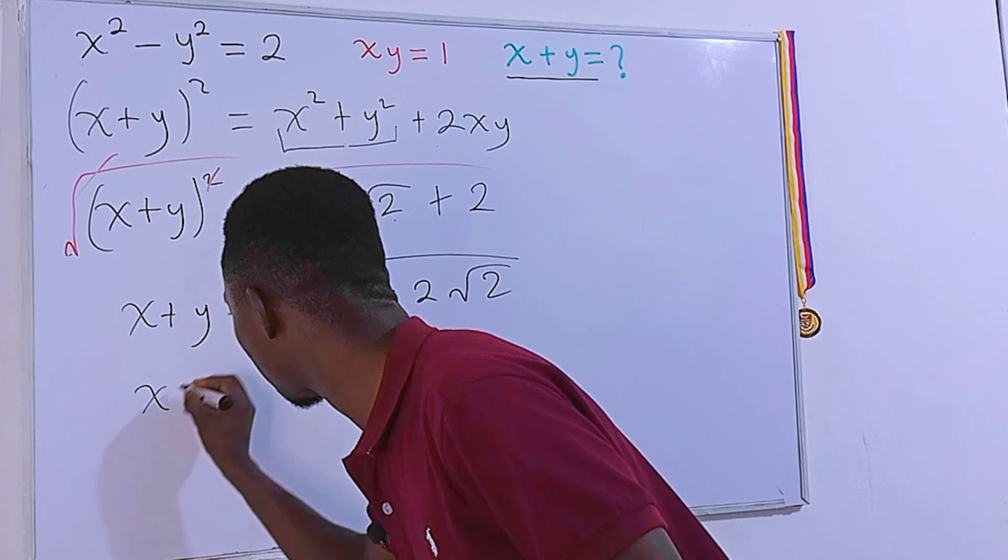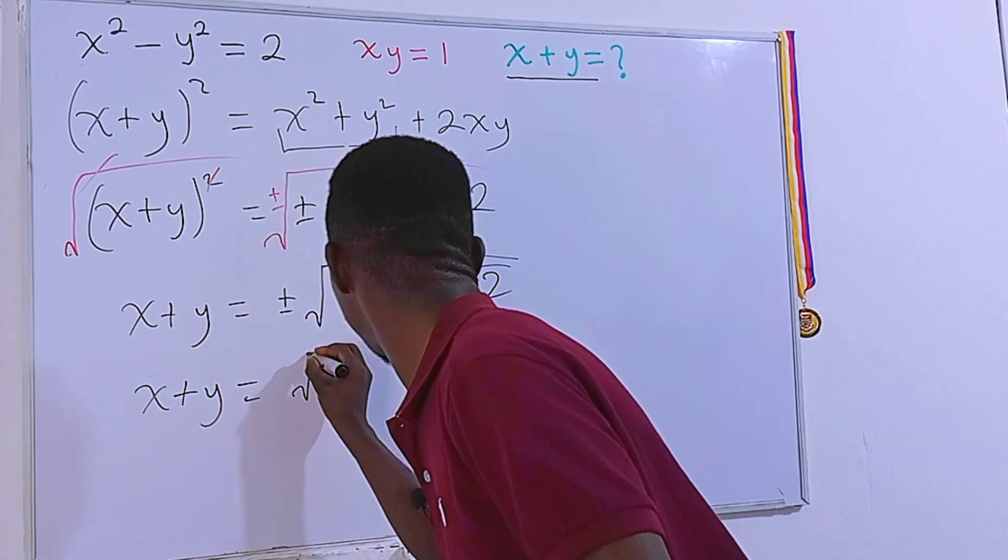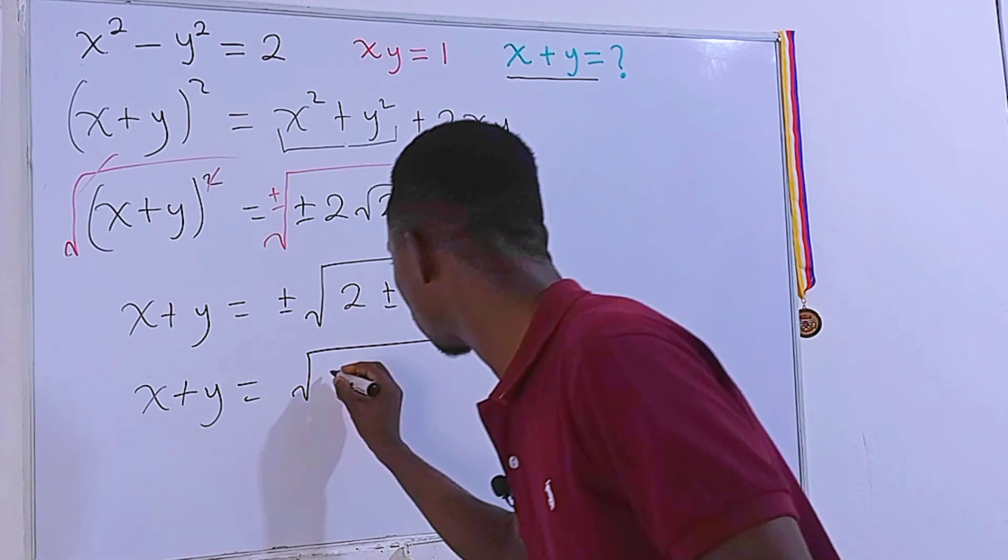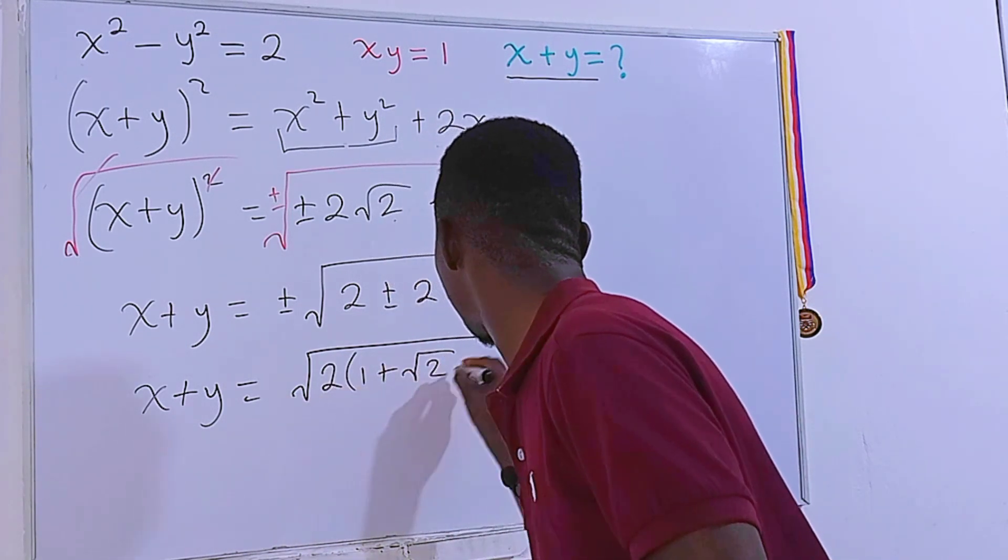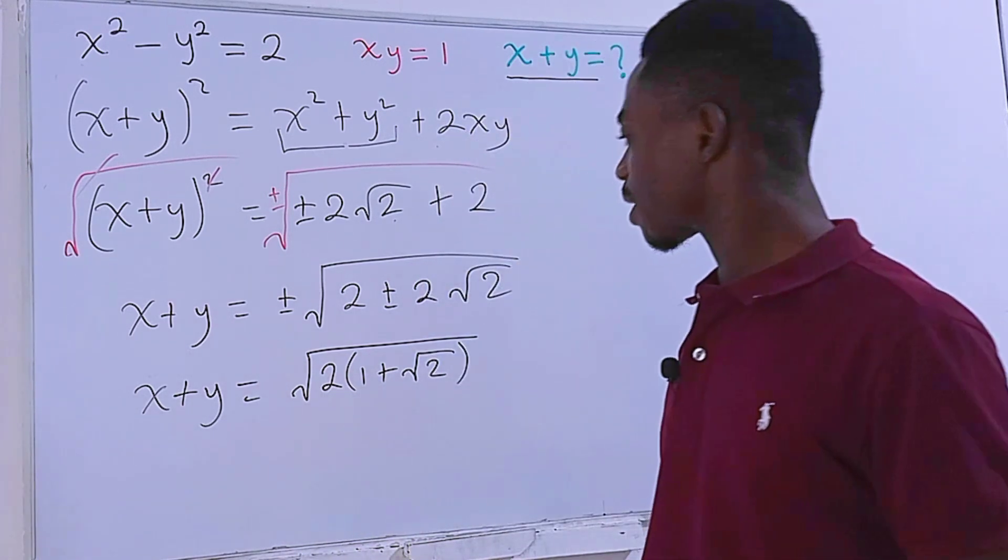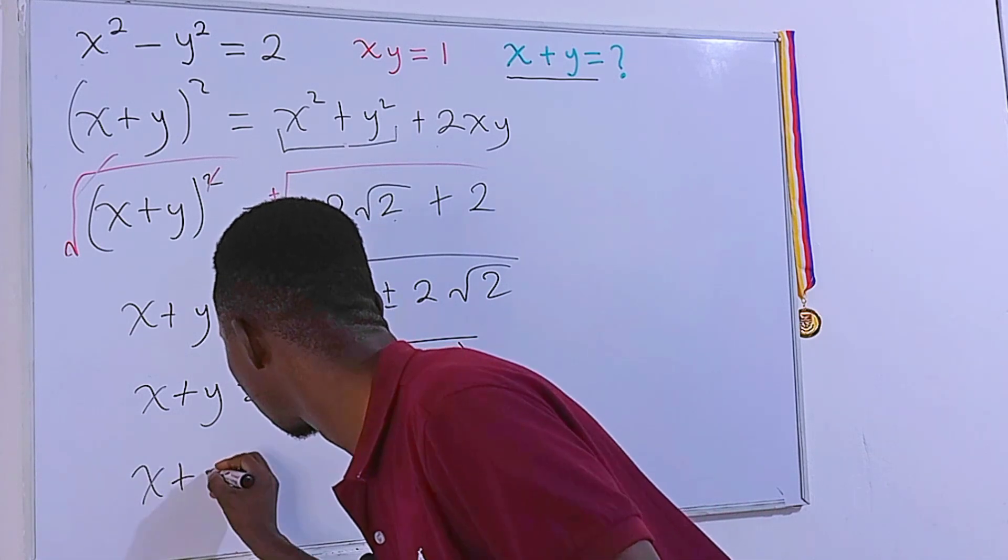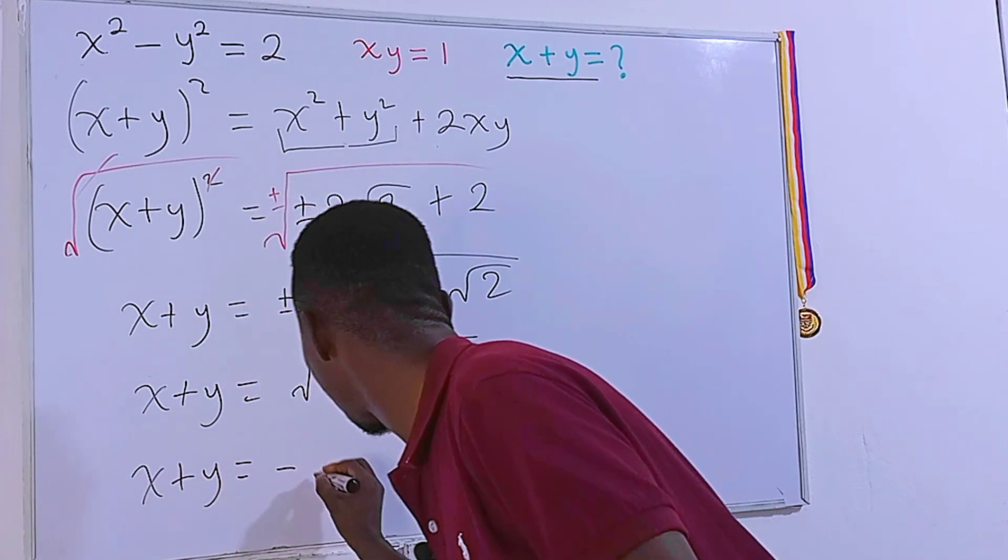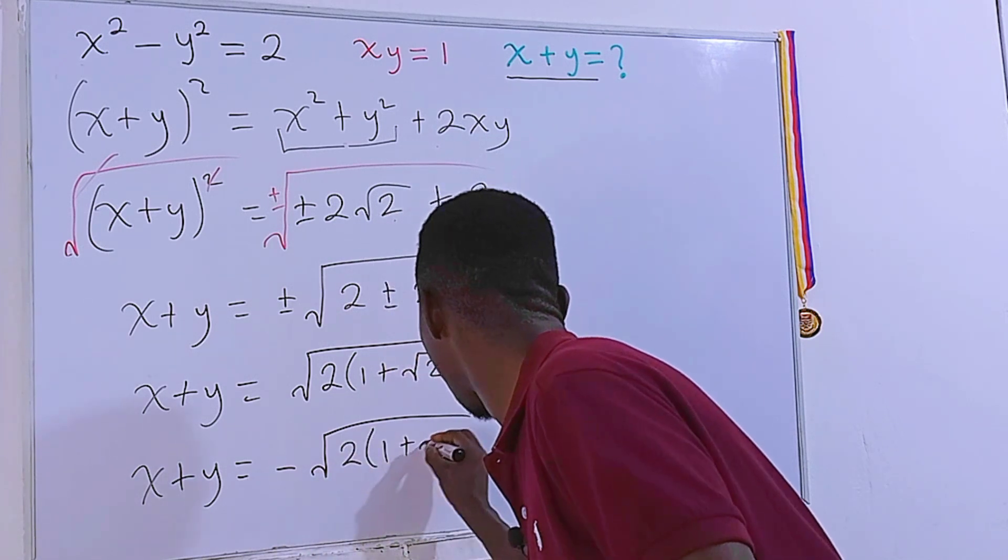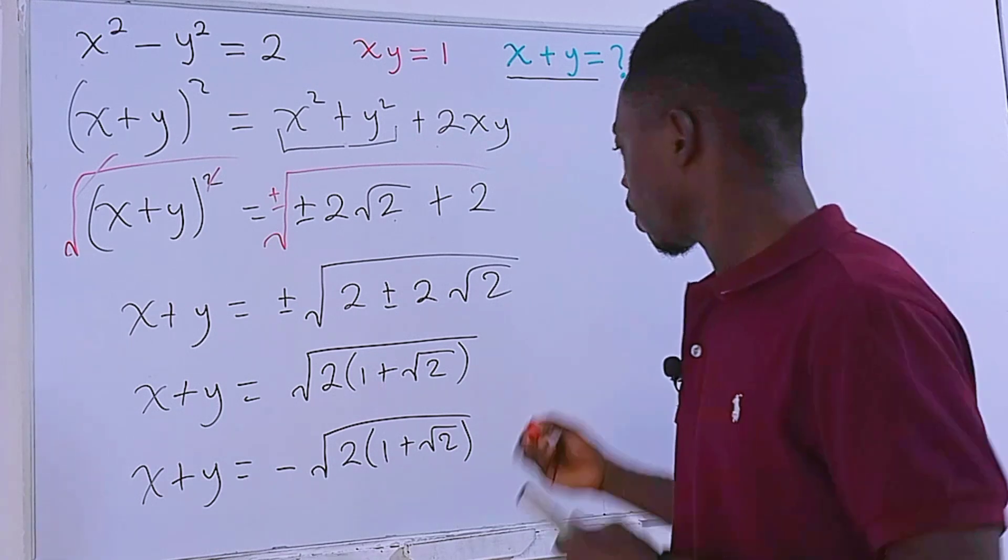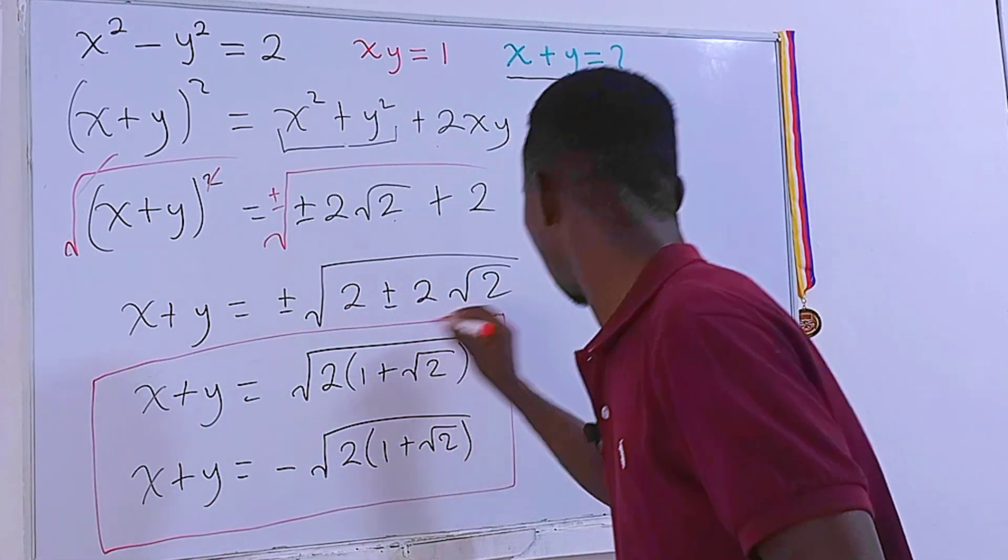The first real solution is going to be x plus y is equal to square root of... In fact, I can factor out 2, so that we have 2 times 1 plus square root of 2, just like this. Then, the second one is also going to be x plus y is equal to negative square root of 2 times 1 plus square root of 2, just like that. So, these are the two real solutions to the problem.